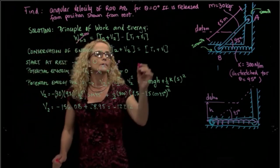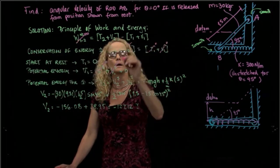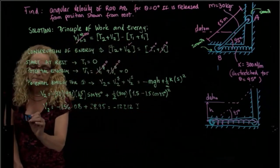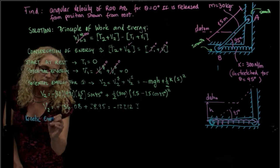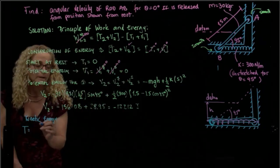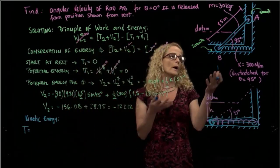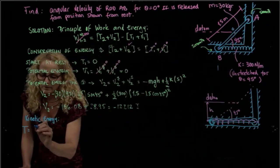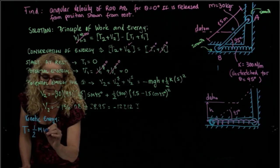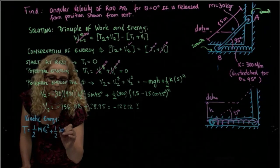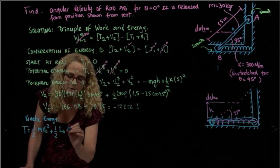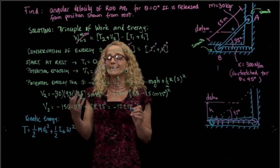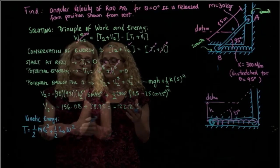The kinetic energy at position two is zero at position one, and we have this value at position two. Now I need to calculate the kinetic energy with respect to the center of gravity: one-half mass times velocity of G squared plus one-half mass moment of inertia times omega squared. As you can see, we have two unknowns here, so I need to do a kinematic analysis to relate those two variables.